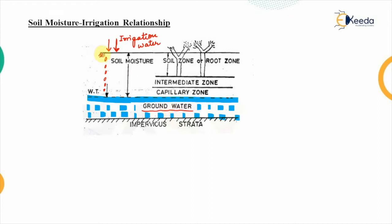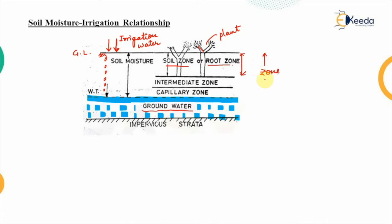The top surface represents the ground level, GL. When we look at the crop shown here, this plant has certain roots going inside the ground. The part of the ground containing the plant roots is known as the soil zone or the root zone of the plant. The total cross-section shown is usually known as the zone of rock fracture.